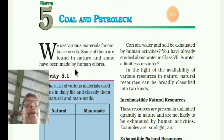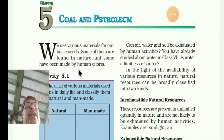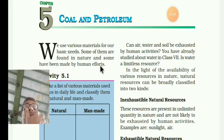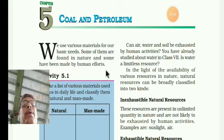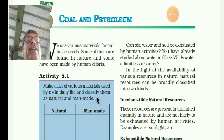And some have been made by human efforts — for example, plastics, rubber, pen, the mouse, board. Like these are by human efforts. You can make a list of various materials used in our daily life and classify them as natural and man-made.